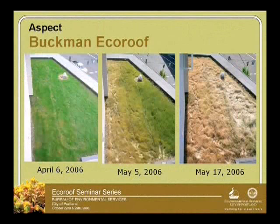On April 6, 2006, it looks green, beautiful, and lush. It was originally planted with native grasses. Then just a month later, you can see that progression — it's actually drier, brownish in color near the wall, and as you get farther away from this wall, it's green. The drain is right over here as well, and water is draining in this direction.